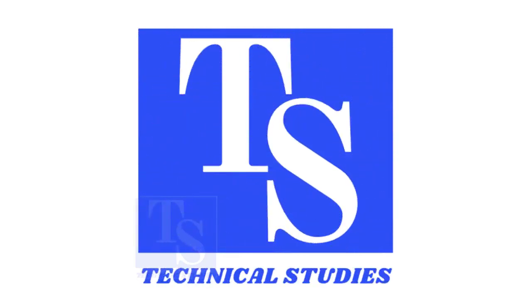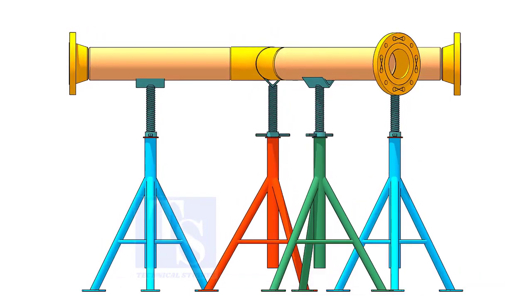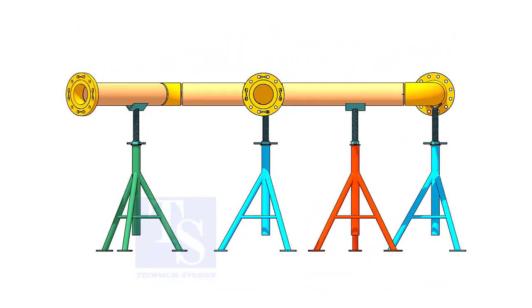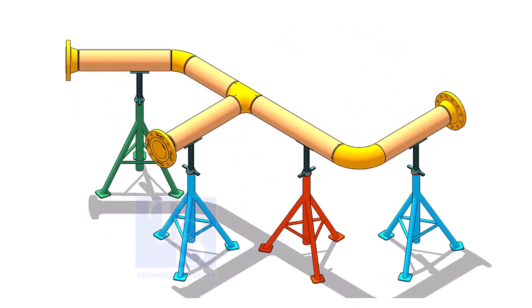Welcome to technical studies. If you get an isometric drawing for fabrication, what you will do first? I am sure you will check what is the size of the pipe, then the pipe schedule, flange class, etc.